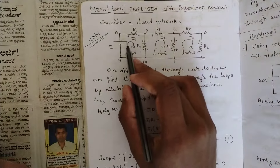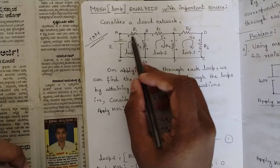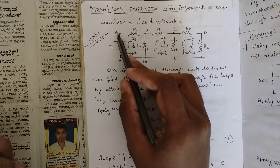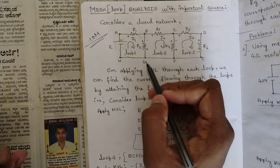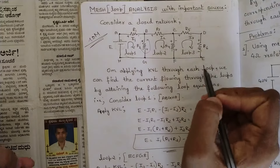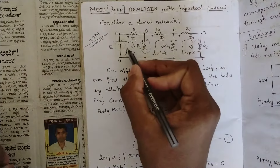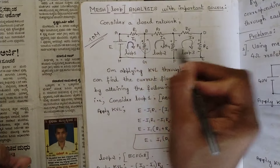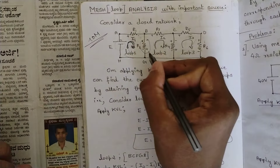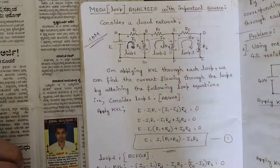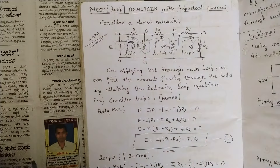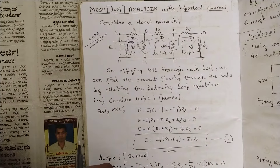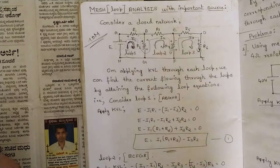Consider a closed network — I have considered a closed network with one voltage source and resistances. The node points are A, B, C, D. From A to B I have considered resistor R1, B to C is R3, C to D is R5, B to G is R2, C to F is R4, D to E is R6. It is drawn in a closed path with three loops: loop 1, loop 2, loop 3. The direction of each loop starts from one point and ends at another. You can consider even the opposite direction — no problem. Some current direction values may change, but you can consider any direction.